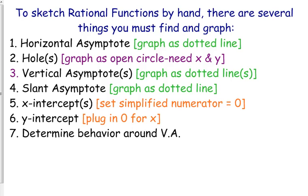All right, so all asymptotes — every single time there's a graph — are dotted lines. I know that on the calculator the vertical asymptotes show up as a solid line; do not draw that solid line. We are not going to touch those asymptotes. You do not touch a vertical or a slant asymptote. Every once in a while you will touch a horizontal asymptote, but I have an example for that, so we'll see how that works.